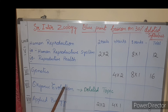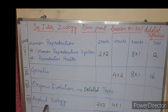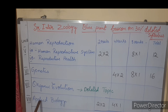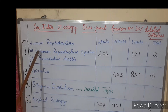Unit 8 is Applied Biology. In applied biology we have Fisheries, Apiculture, Sericulture, Poultry, and related topics. From Applied Biology we get two two-mark questions and one four-mark question, so a total of eight marks from this unit.